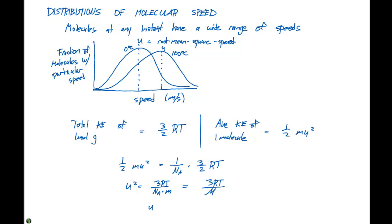So the root mean square speed u, which we described above, can be calculated by taking three times RT divided by the molar mass all to the one half power. So this gives us an equation to calculate our root mean square speed.